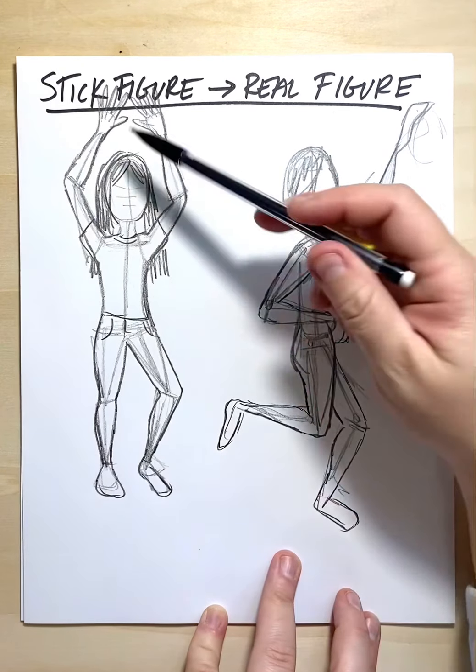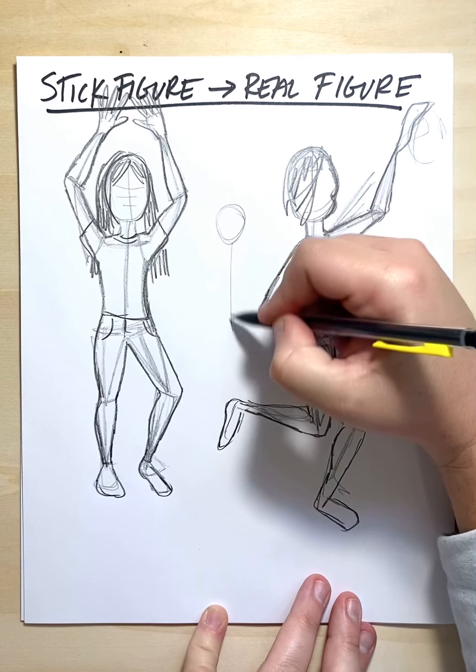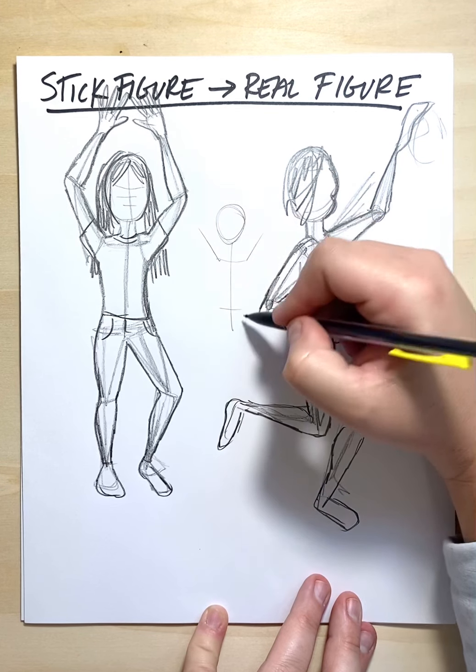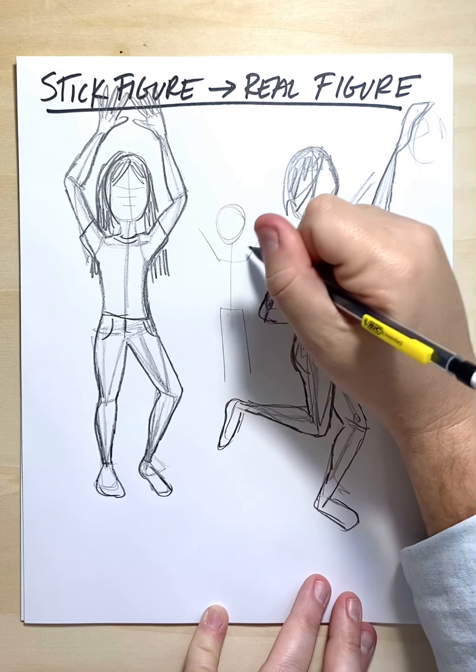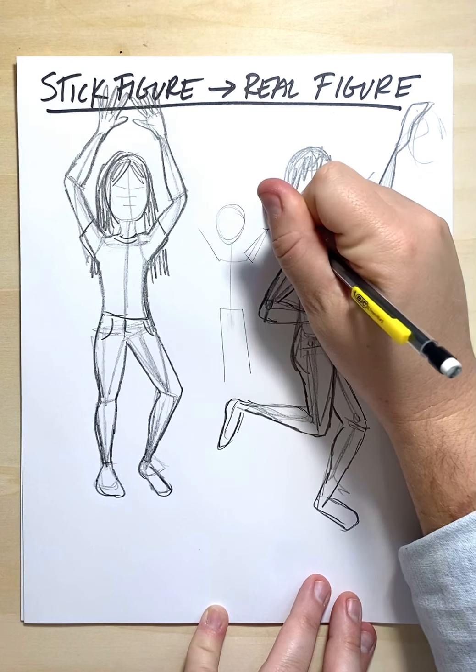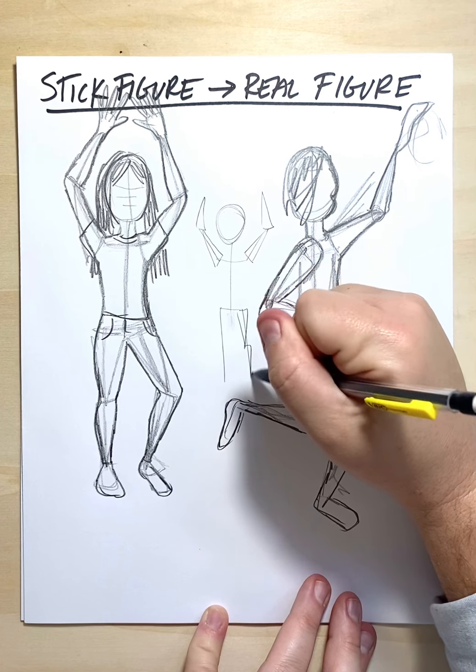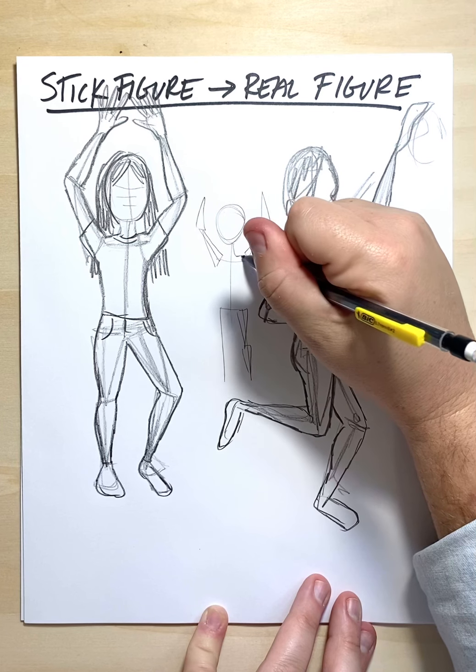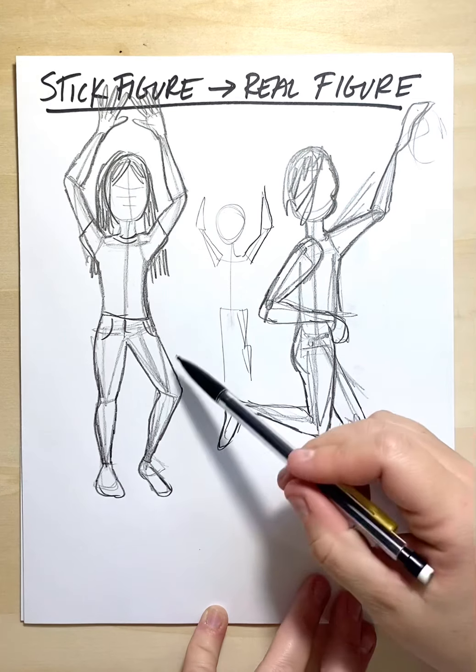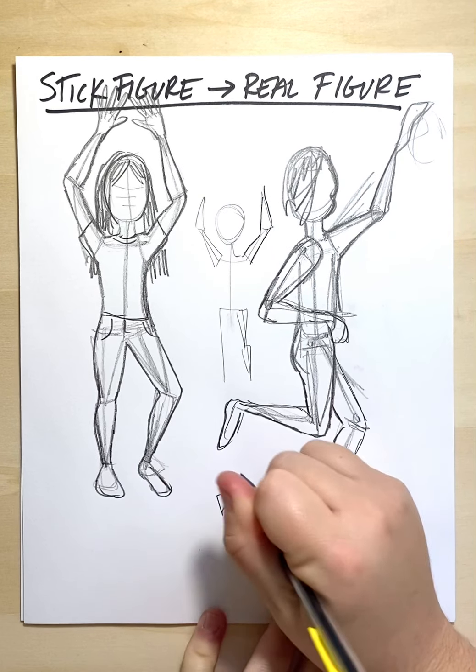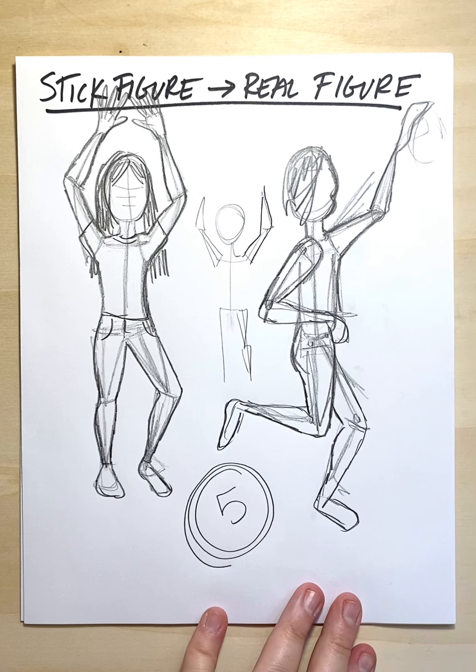So notice you can do a frontal or a sideways position, but we always start with our stick figure. Then we add in our shapes, so our triangles. And then we want to round that out to be a person. I can't wait to see the five full figures that you bring to life in our warm-up. Thank you guys.